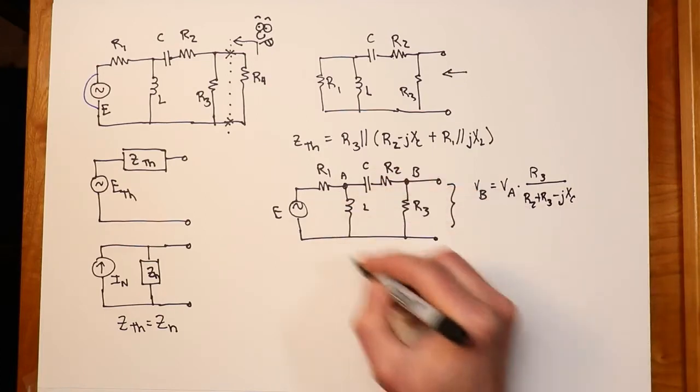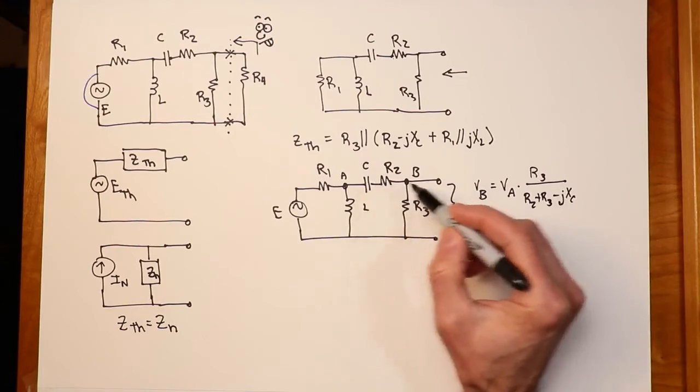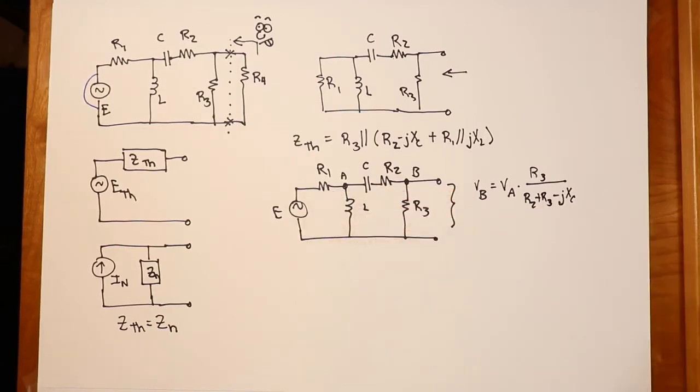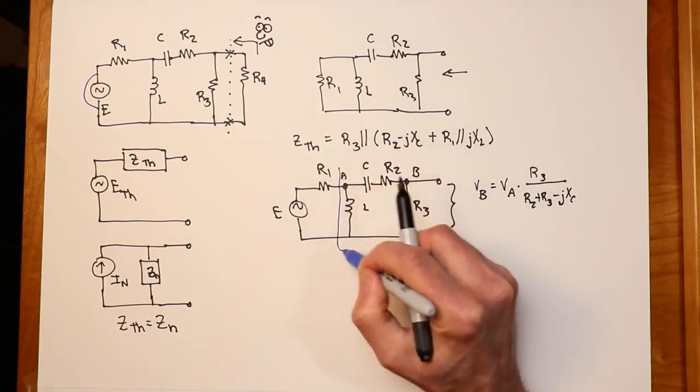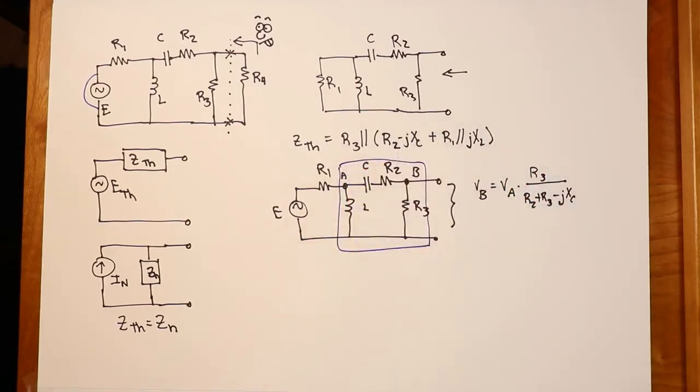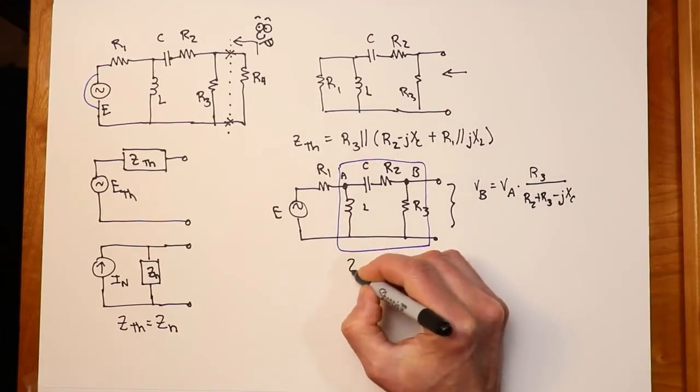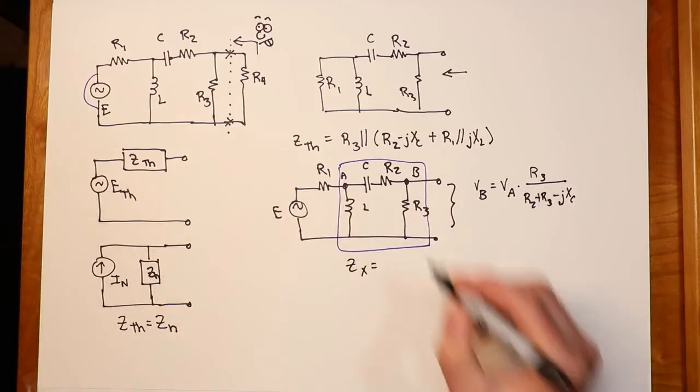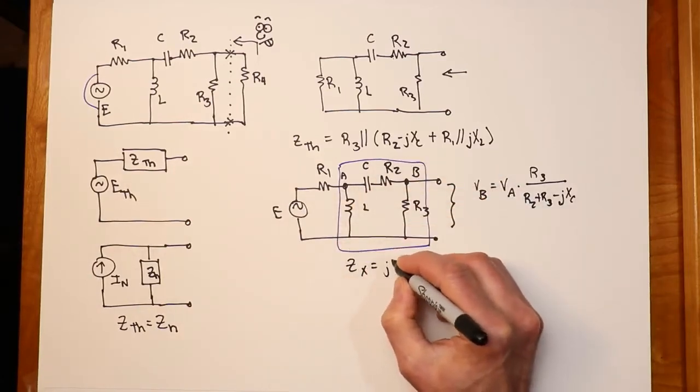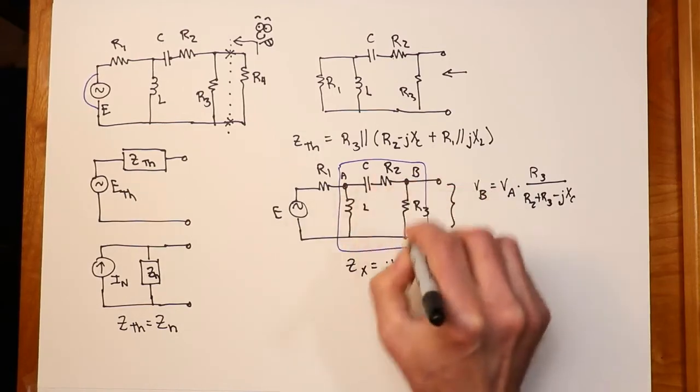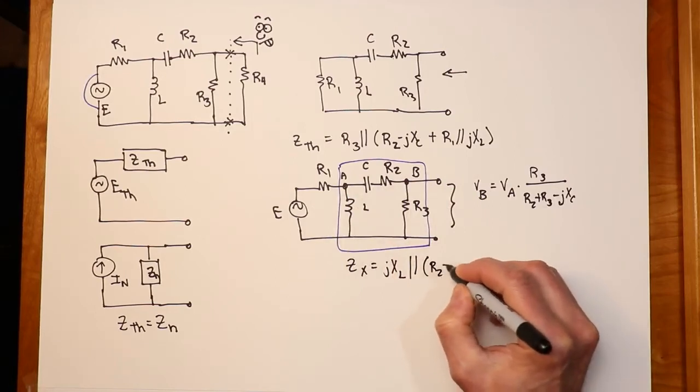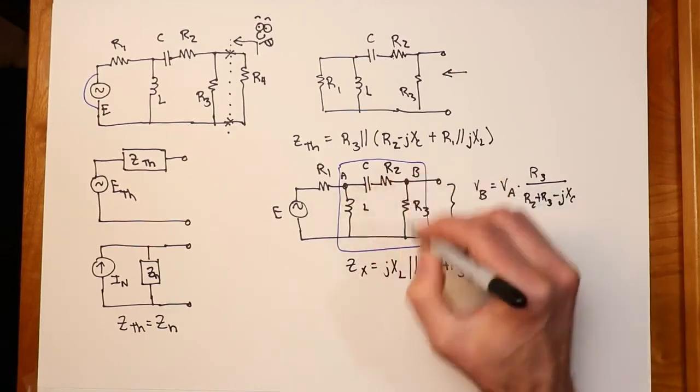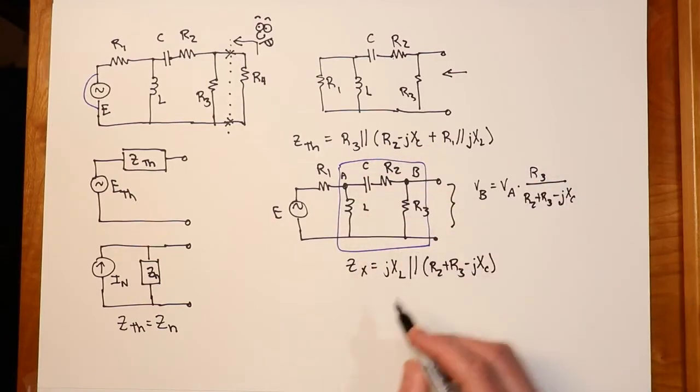So how do I find VA? Well, we can do the same kind of thing a second time. In other words, it's a divider between this combination of four components versus R1. Well, just to simplify this, let's call this whole thing, let's call this collection of four things here, Zx. How's that for an inventive name? Again, we're looking at this now from the position of E looking this way. So what do I see over here? Well, that's jX sub L in parallel with this combination. In other words, the R2 plus the R3 minus the jX sub C. That's what this is. That's in parallel with the X sub L. So the stuff in the blue box, that's Zx.